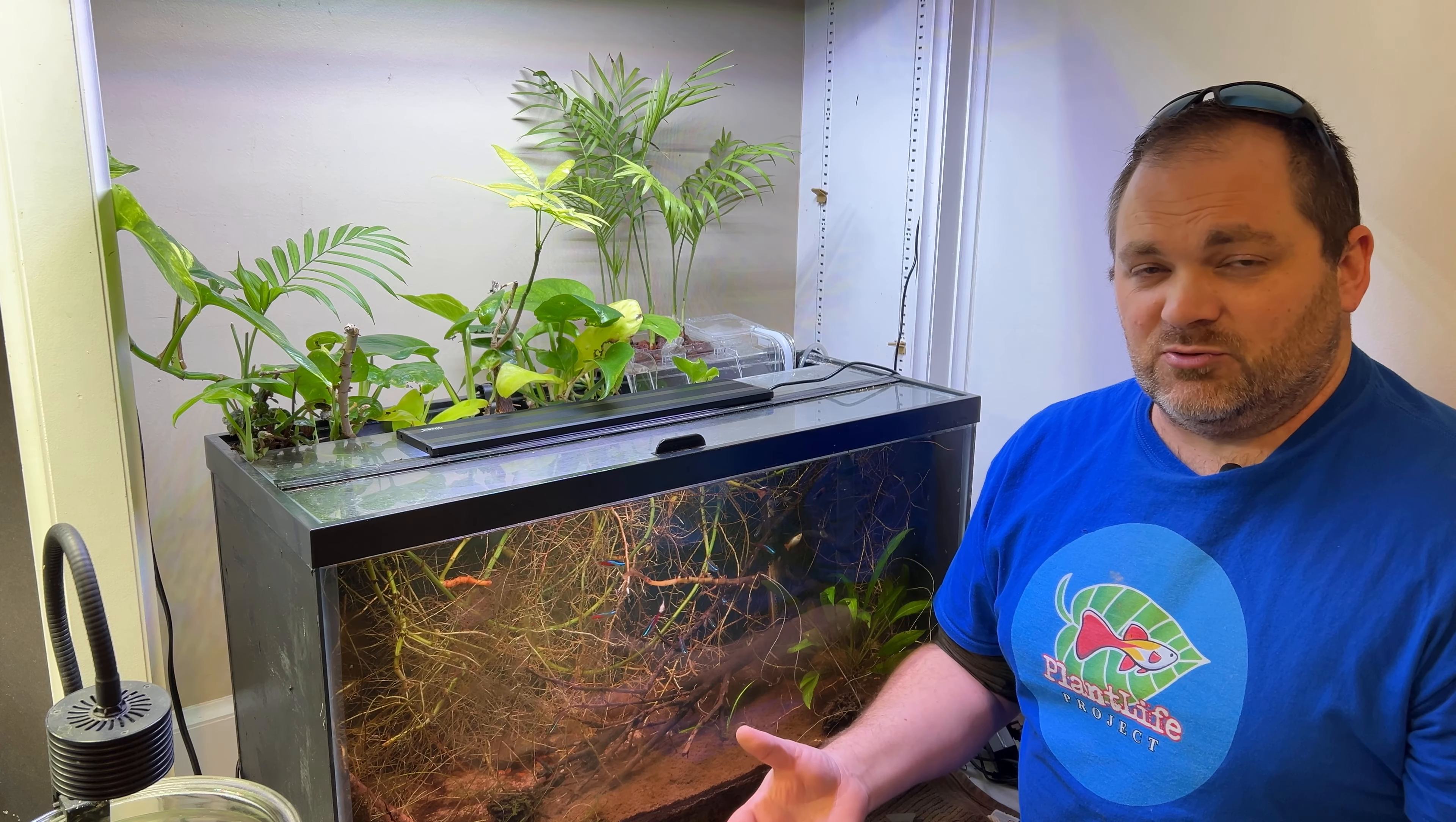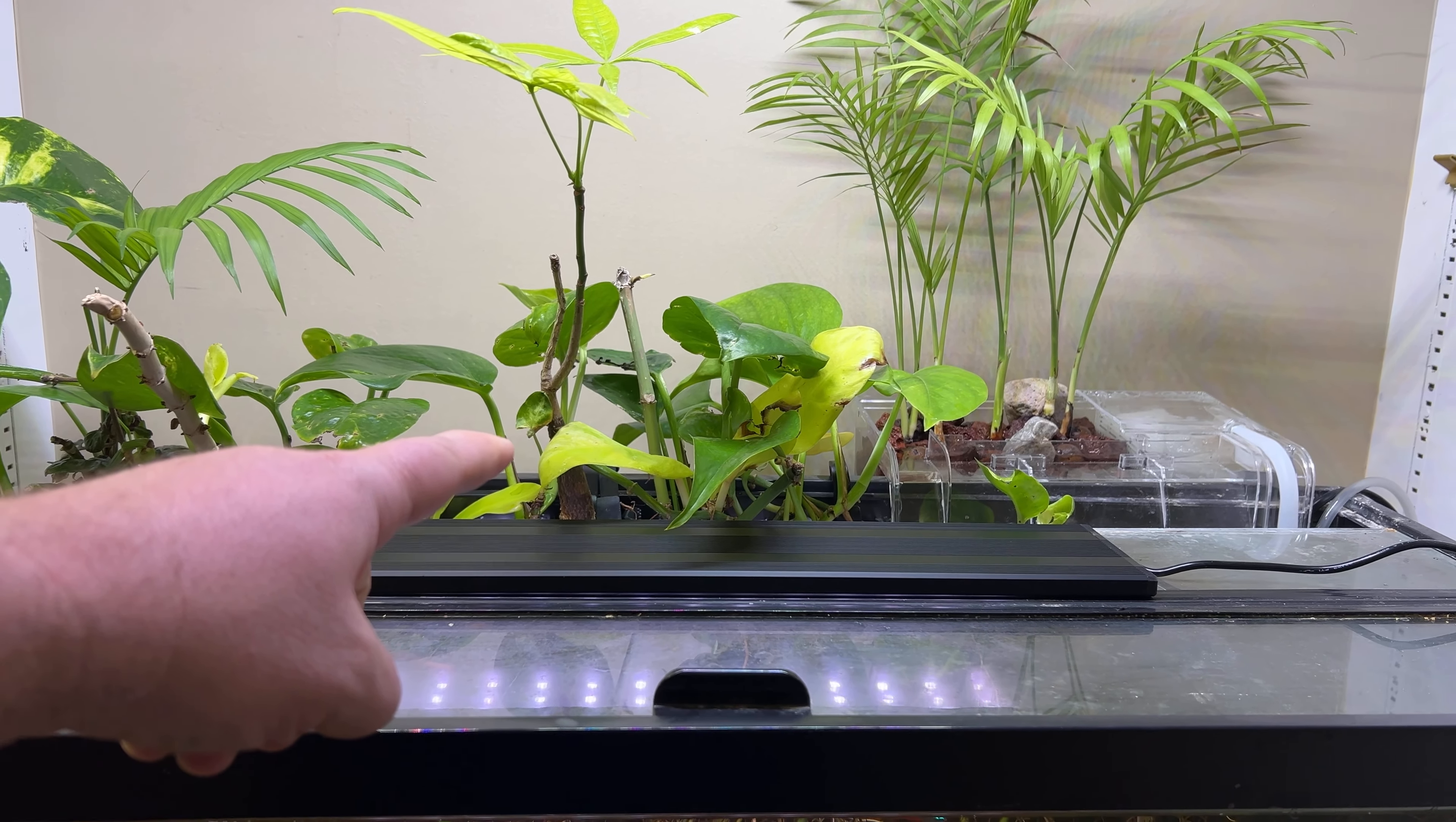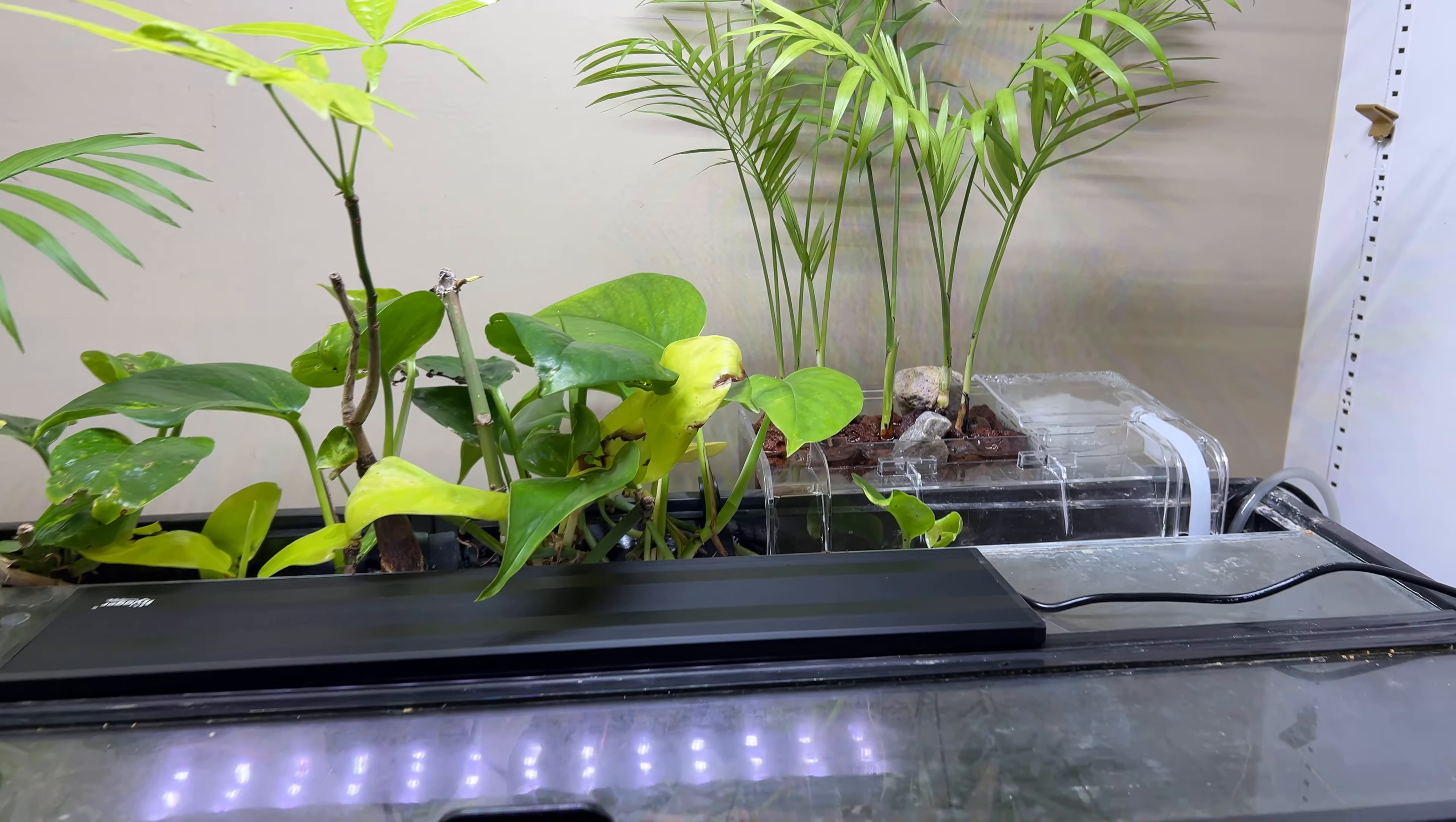A zip tie will secure this connection reasonably well, and perhaps silicone would help reinforce this connection and prevent water from coming in completely. I may do this at a later date. Now this retrofitted tube that we've made will fit down inside the short mounted tube which attaches to the under-gravel filter plate.